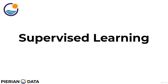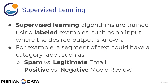Welcome back everyone to this lecture on supervised learning. Supervised learning algorithms are trained using labeled examples — a keyword being 'label' — such as an input where the desired output is known. That means within your dataset you're going to have some historical features with historical labels. You already have that information, such as a segment of text could have a category label. So you take a bunch of previous emails and someone has already gone by and classified them using the correct label.